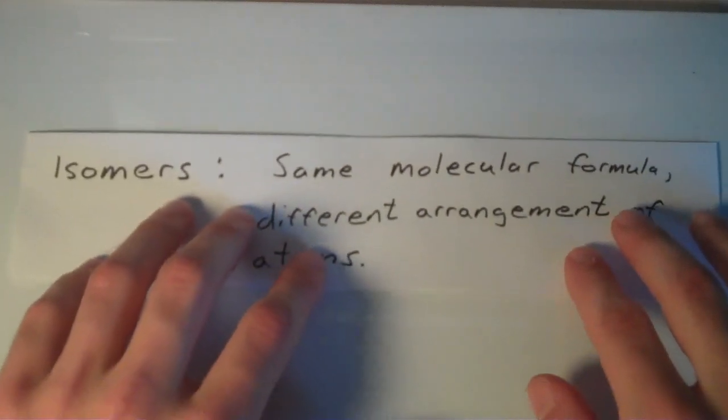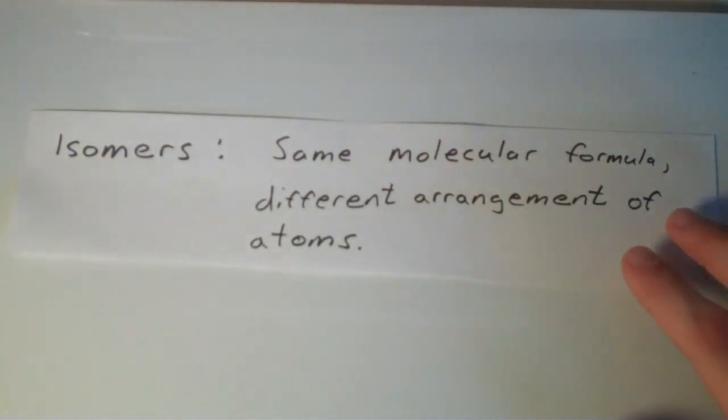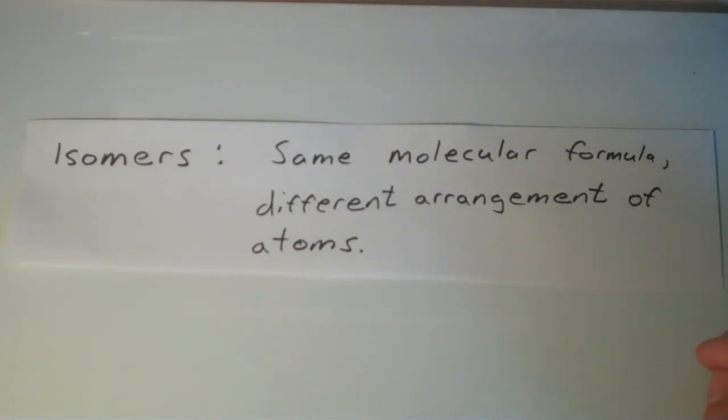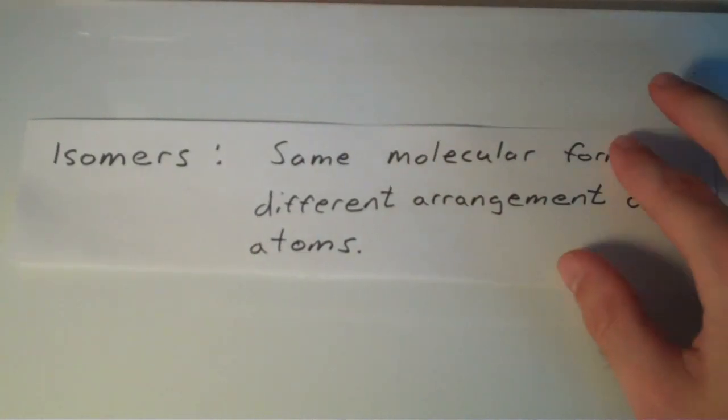So hopefully this is sort of a review by now. But isomers are compounds that have the same molecular formula. So in other words, they have the same number of each type of atom. But something about the arrangement of their atoms is different. So one class of isomers is what we call cis-trans isomers.